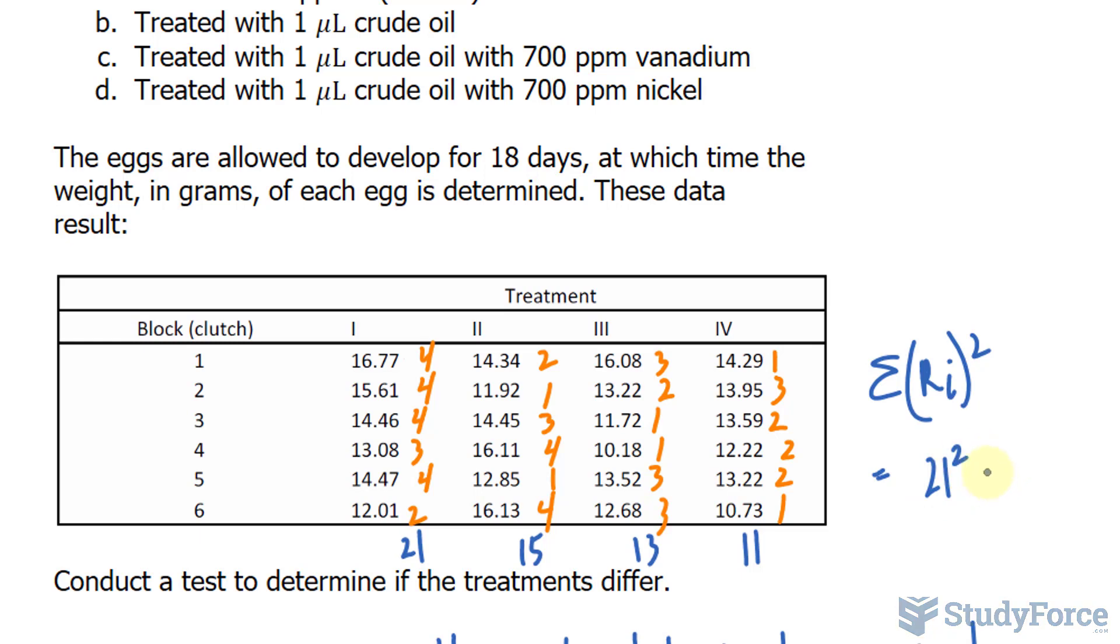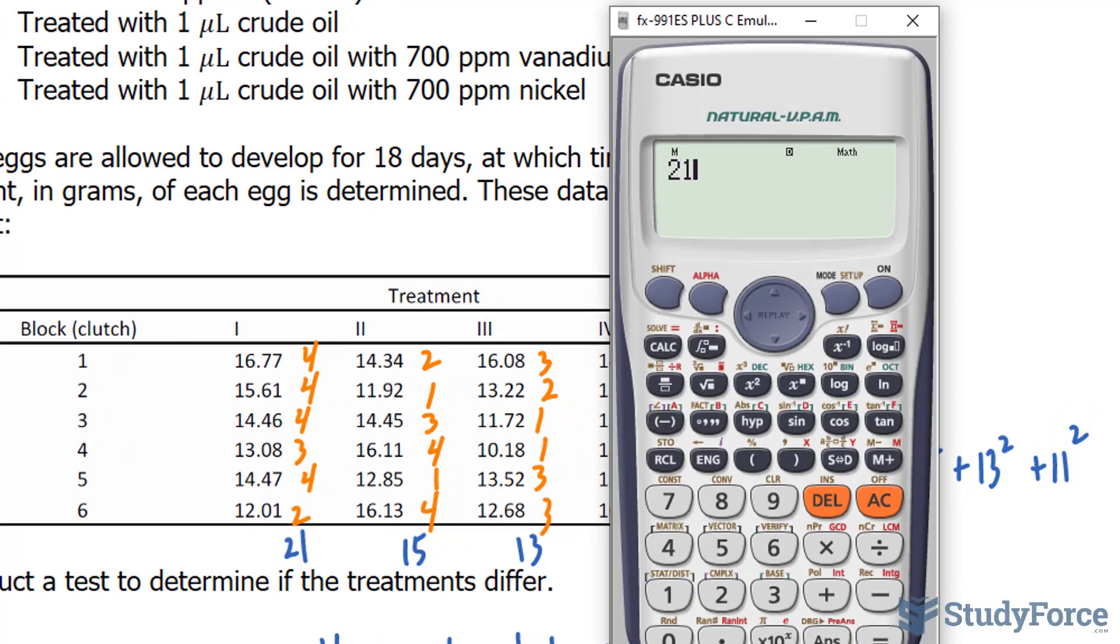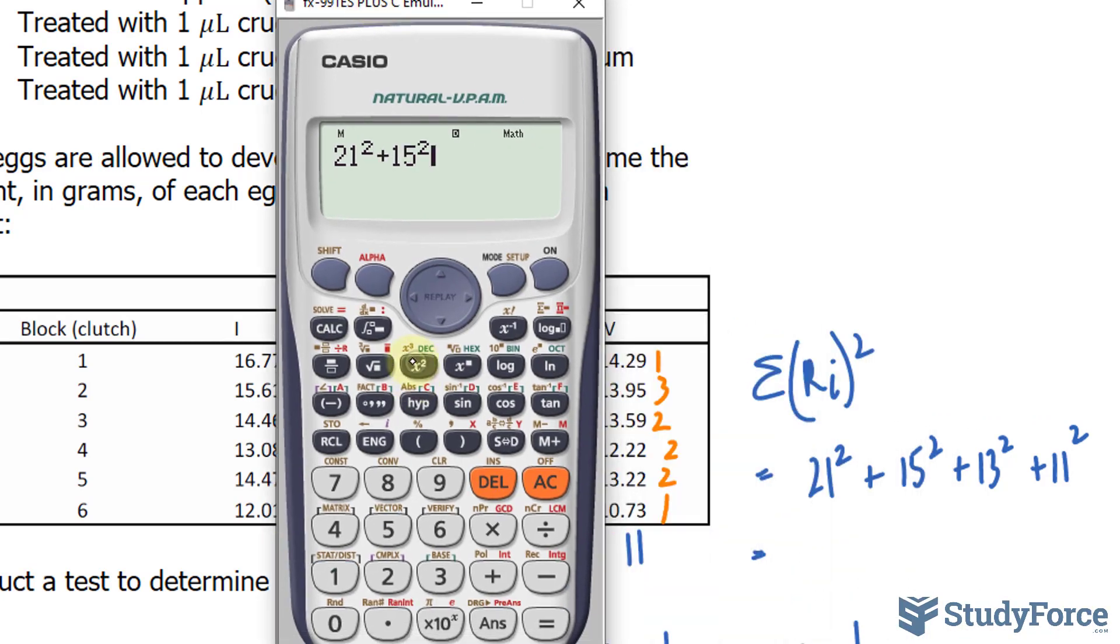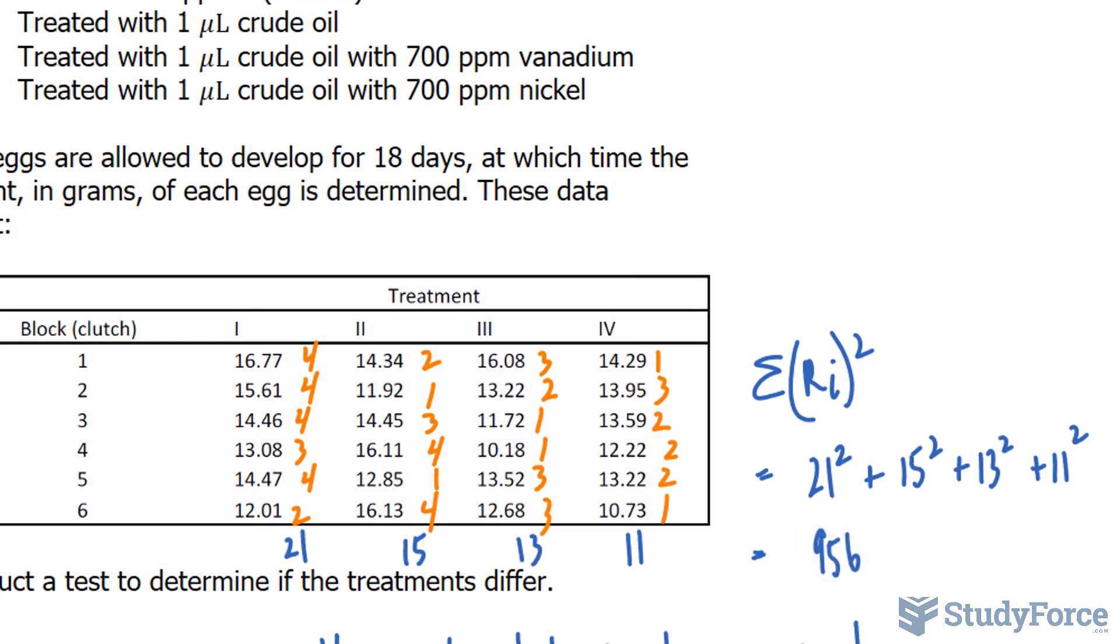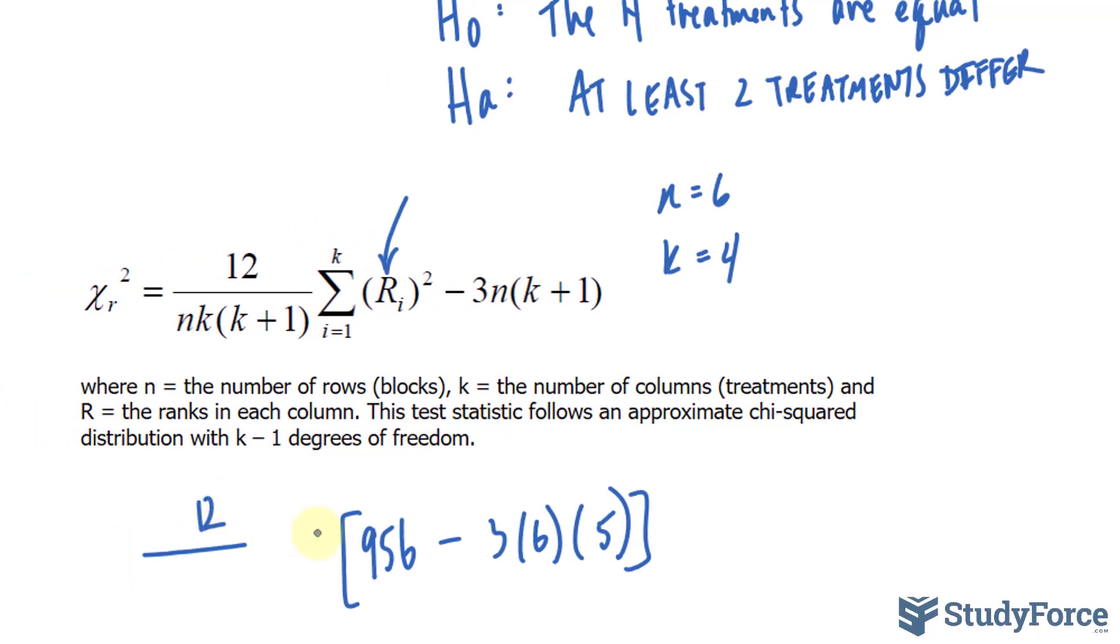So let's find out what the sum of these values are. We have 21 raised to the power of 2 plus 15 raised to the power of 2, 13 squared plus 11 squared. 21 squared plus 15 squared plus 13 squared plus 11 squared gives us 956. 956 minus 3 times 6 bracket 5, and this factor is 12 over 6 times 4 times 5. This should give you chi-square sub r.